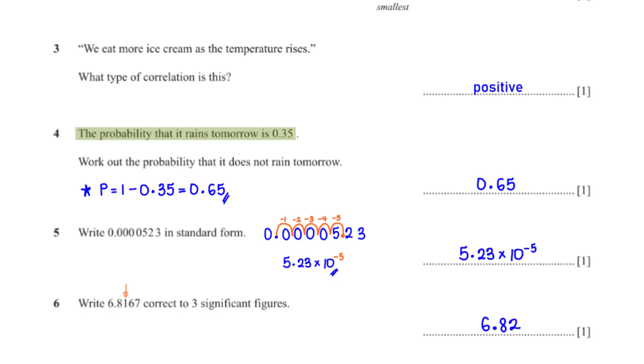The probability that it rains tomorrow is 0.35, work out the probability that it does not rain tomorrow. The sum of the probabilities that it rains tomorrow and does not rain tomorrow must add up to 1. So to get the probability that it does not rain tomorrow, we subtract 0.35 from 1, which gives us 0.65.